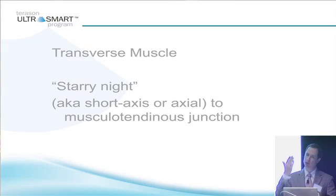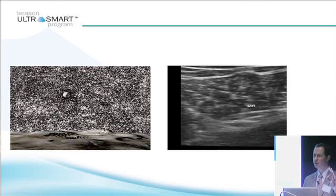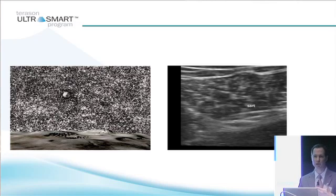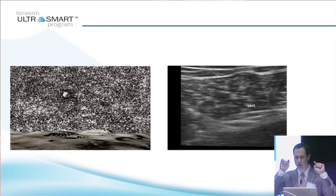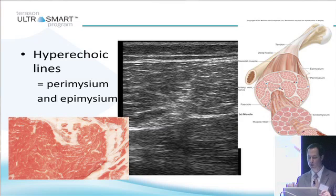Muscle, if you take a cross section through muscle, it's classically described as being a starry night. Here we're cross-section to the musculotendinous junction. Here's a cross section of sartorius. If you could imagine each one of those pinpoint bright signals — they're transverse, cross-section. This is one of our orthogonal planes. So if I'm transverse to this muscle, imagine each one of these beams of light coming straight at me from stars. You've got muscle fibers coming straight at you, straight through the screen, and those are hyperechoic.